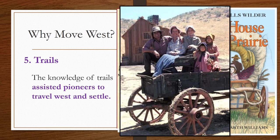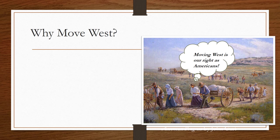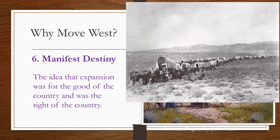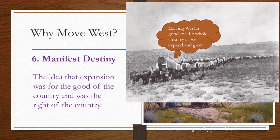The last reason people moved west was the idea of Manifest Destiny. You can see those homesteaders trekking the trail — it would take them many weeks, in fact several months. The thought is: moving west is our right as Americans. Manifest Destiny is the idea that expansion was for the good of the country and was the right of the country. It motivated people to pack up their belongings and head west for the good of America and themselves.